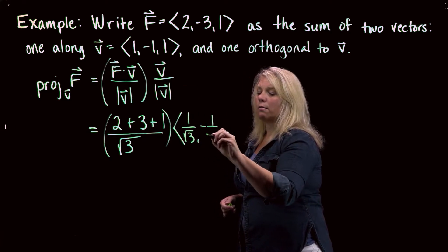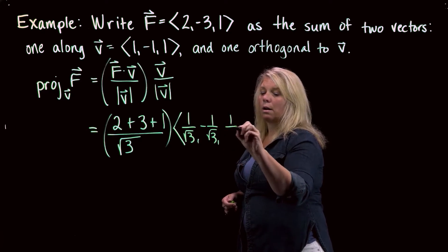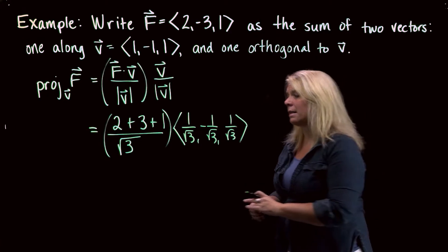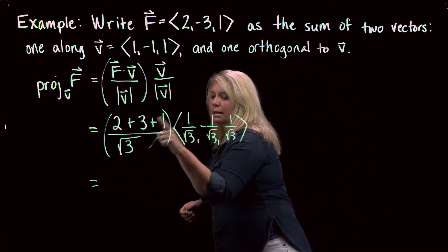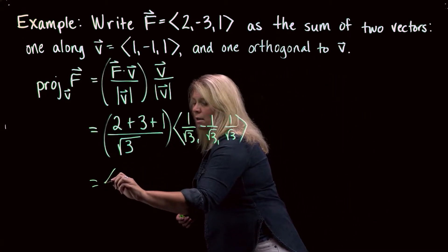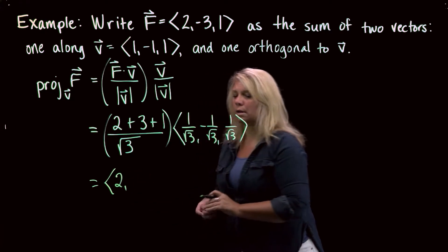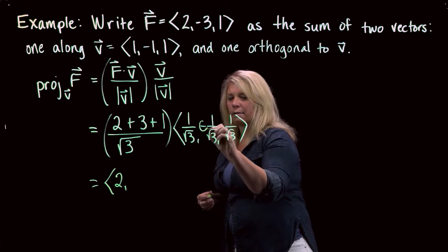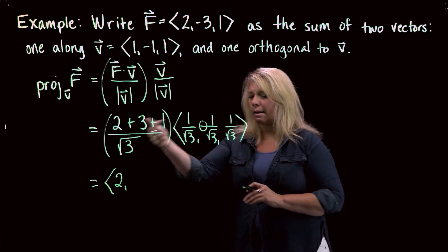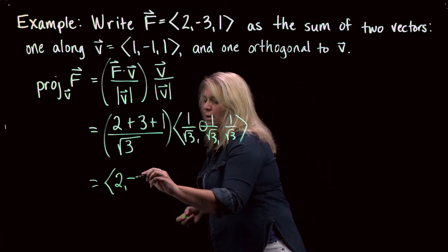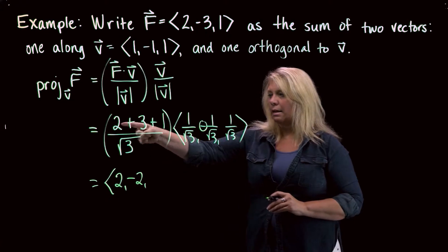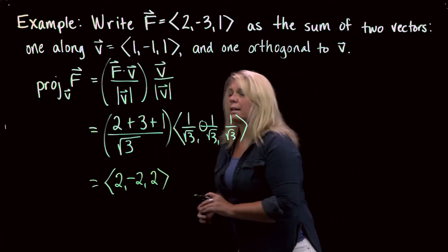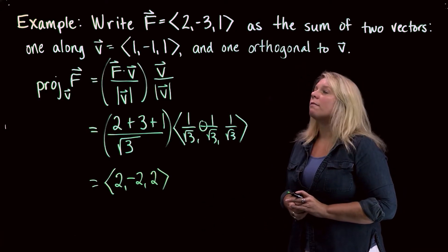Multiplying the scalar 6/√3 by the unit vector components: 6 over 3 is 2, negative 6 over 3 is −2 (don't forget the negative), and 6 over 3 is 2. So the projection of F onto V is the vector (2, −2, 2). That's the first vector they asked us to find — the component of F along V.